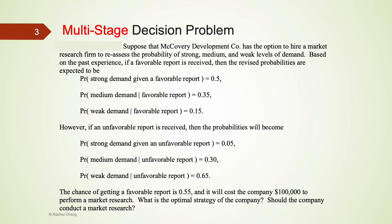On the other hand, if an unfavorable report is received, these probabilities would change to 5%, 30%, and 65%. The company believes that there is almost the same chance of getting a favorable or unfavorable report: 55% versus 45%.